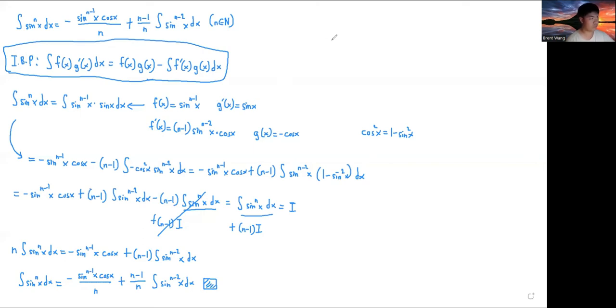Notice that this would not have worked if we said f of x was sine x and g prime x was equal to sine n minus 1 x. Like this simply wouldn't have worked because then what would you have said for your g of x? Like there probably isn't even a solution, or if it is, it would be a very big pain in the ass to try to evaluate what this was. But by choosing the correct f of x and g prime x, it made the process a whole lot easier.